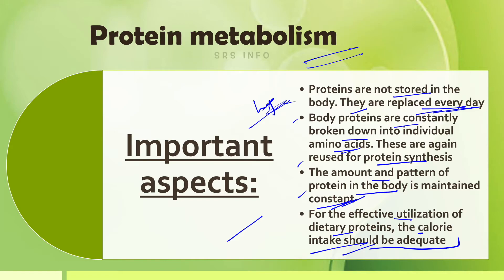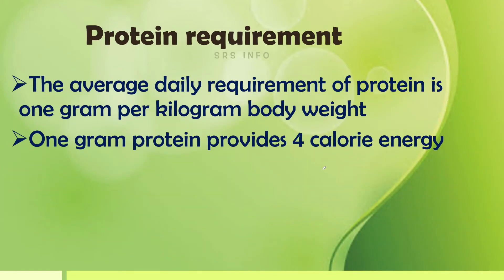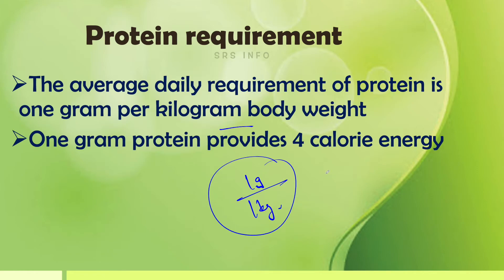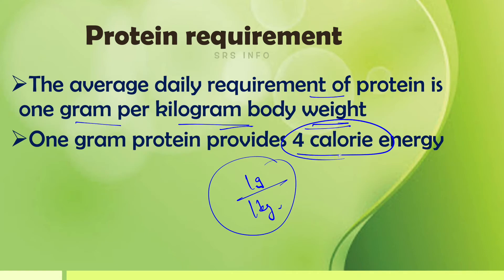What is the average daily requirement of protein for an adult? It is 1 gram per kilogram of body weight. So you can calculate how much protein you need per day. Also, 1 gram of protein provides 4 calories of energy.